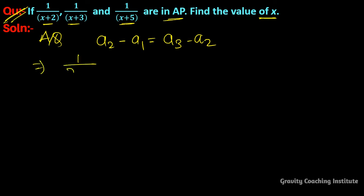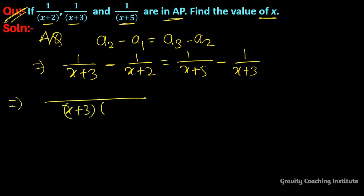a2 is 1 upon x plus 3 minus 1 upon x plus 2 equals 1 upon x plus 5 minus 1 upon x plus 3. And now we will take LCM.